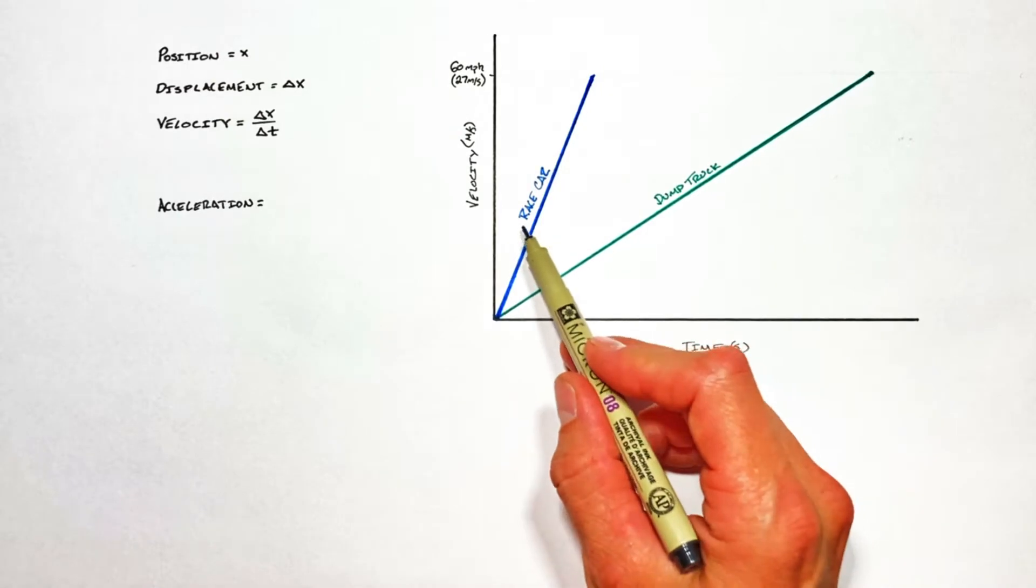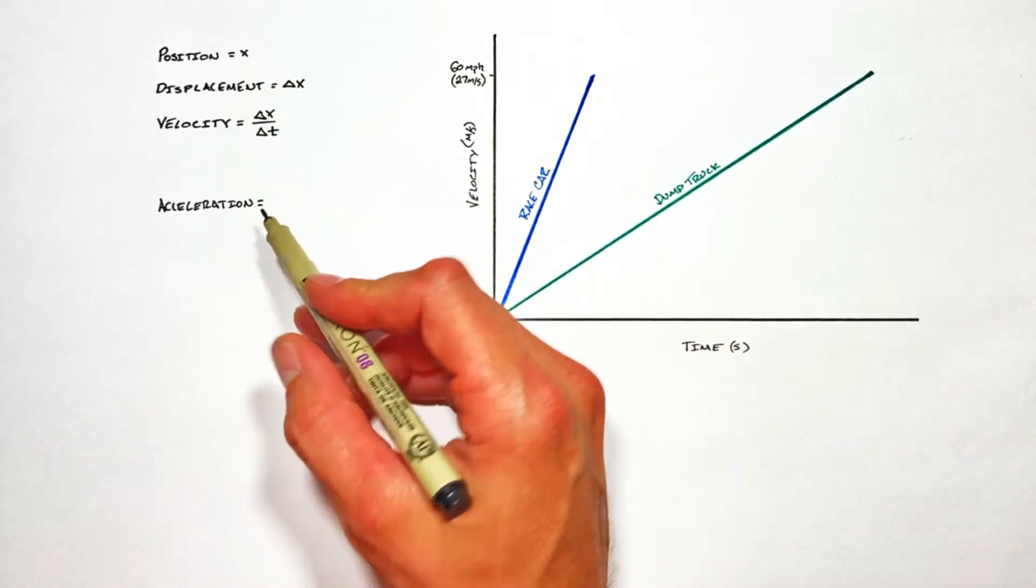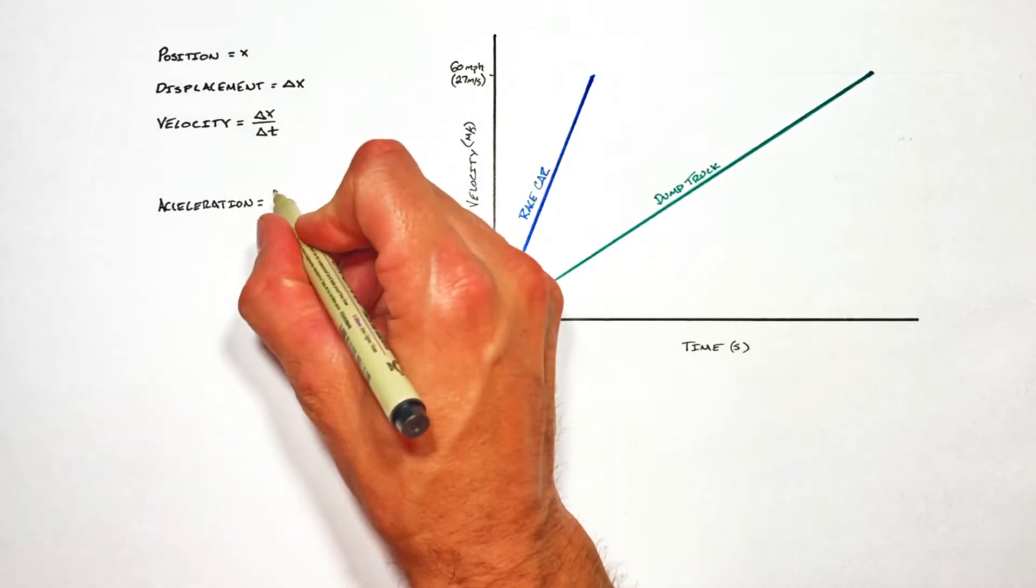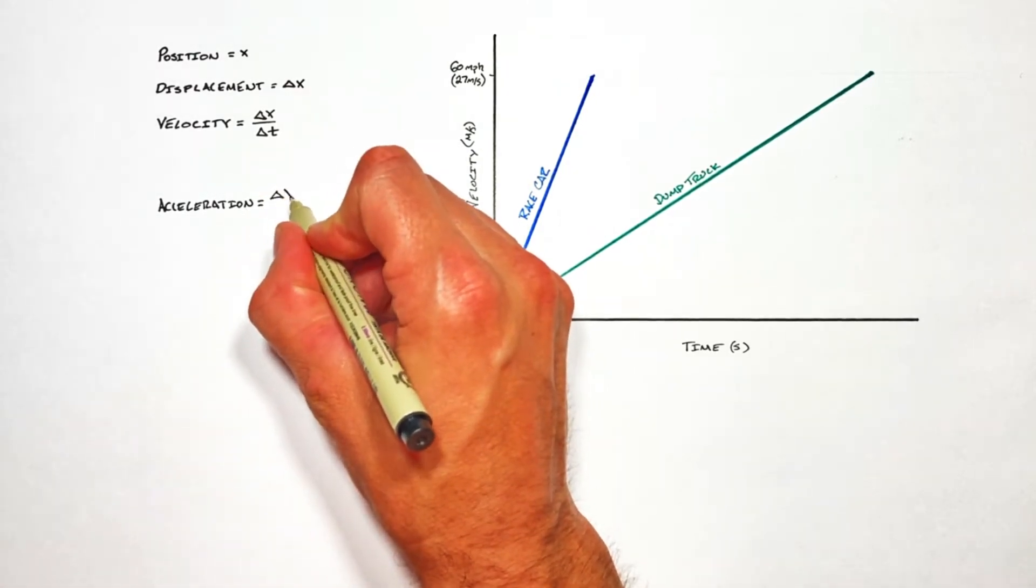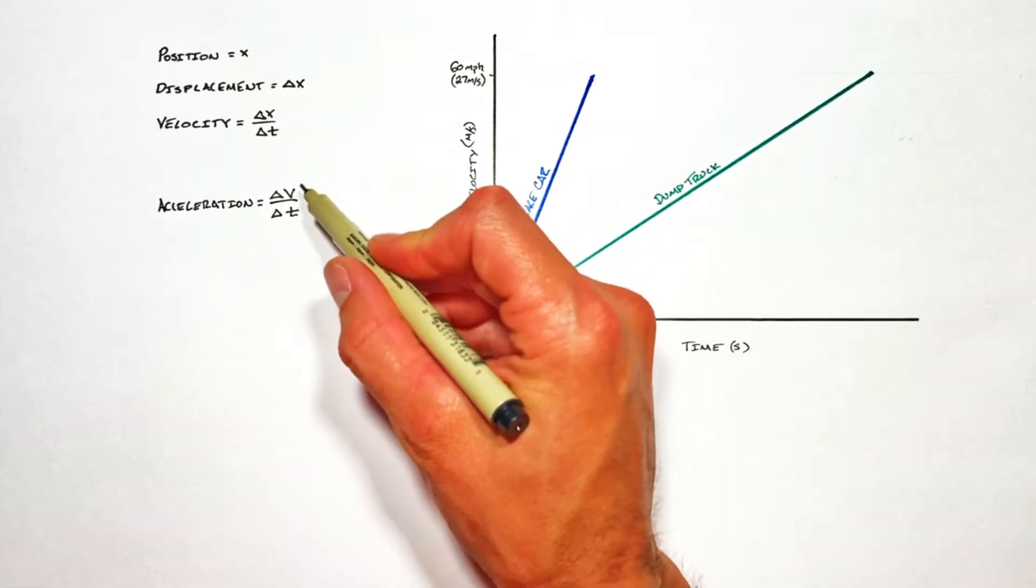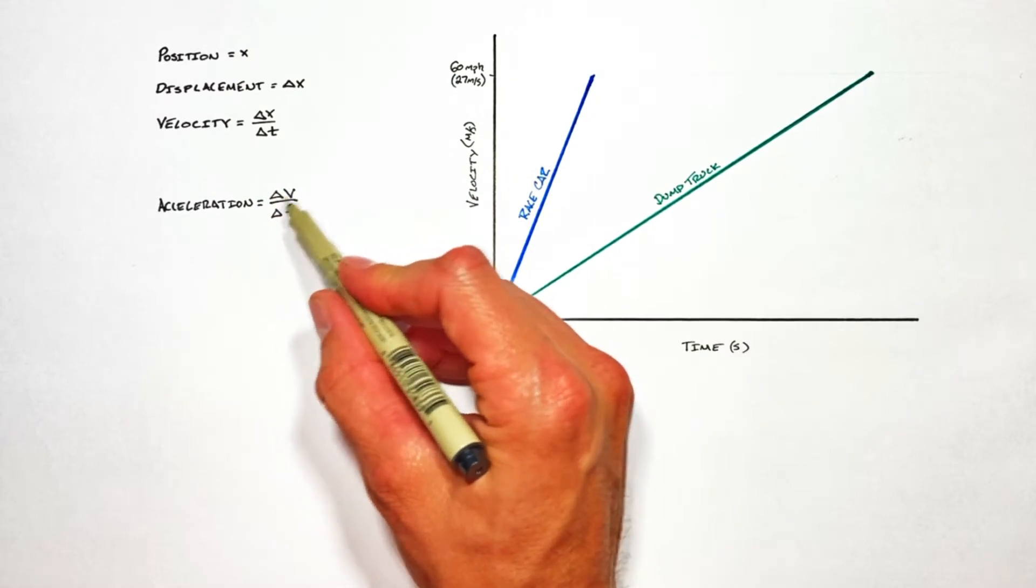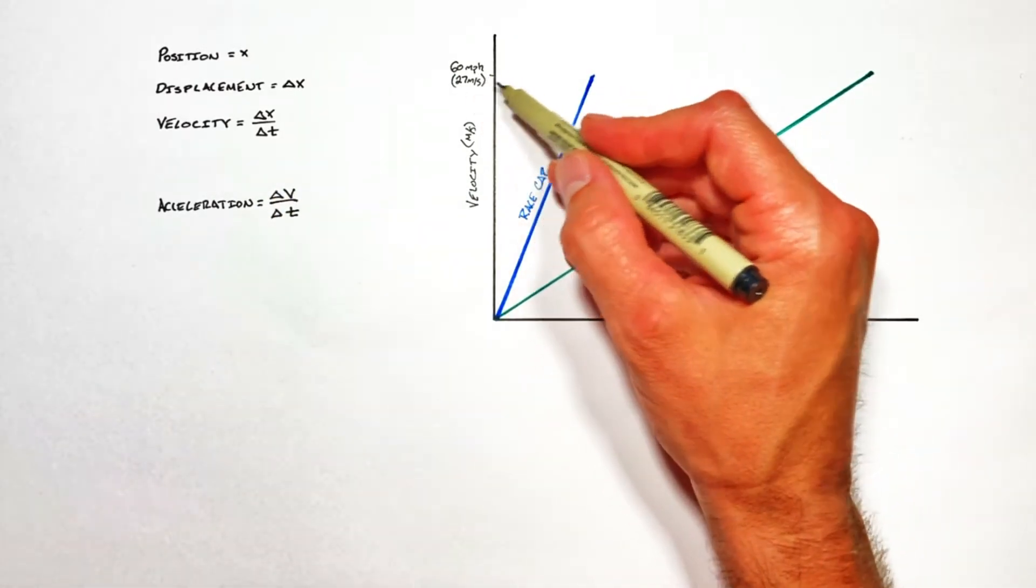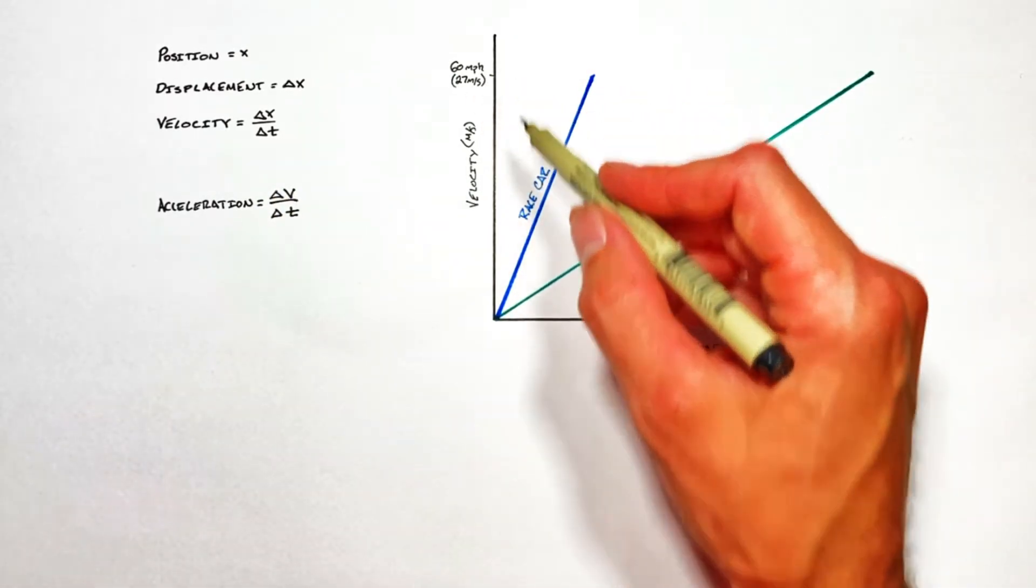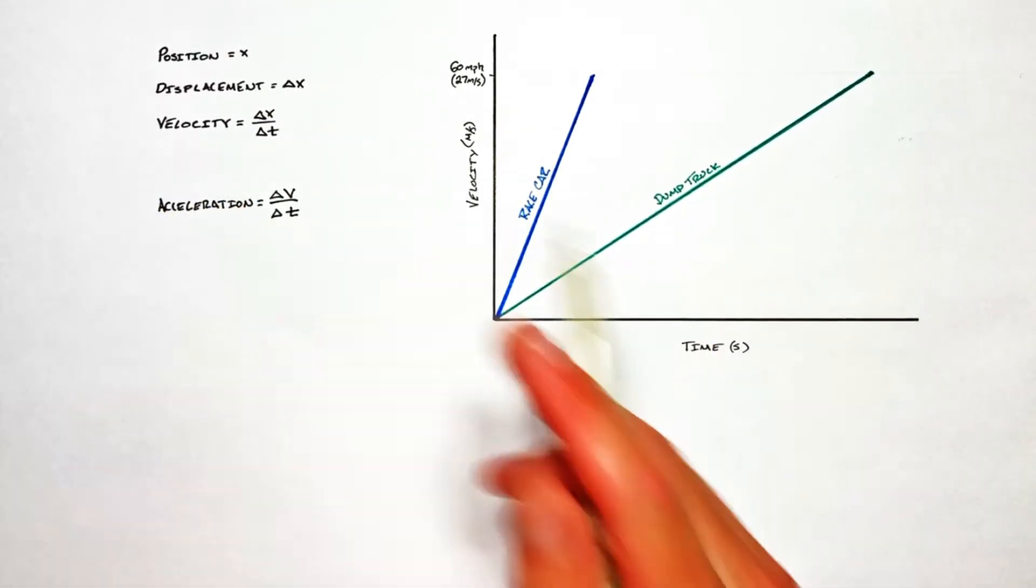It's in the difference in performance between these two vehicles that we're able to define acceleration. Acceleration is given by change in velocity over change in time. While both vehicles had the same change in velocity from zero up to sixty miles an hour, they did so in very different amounts of time, meaning they have different accelerations.